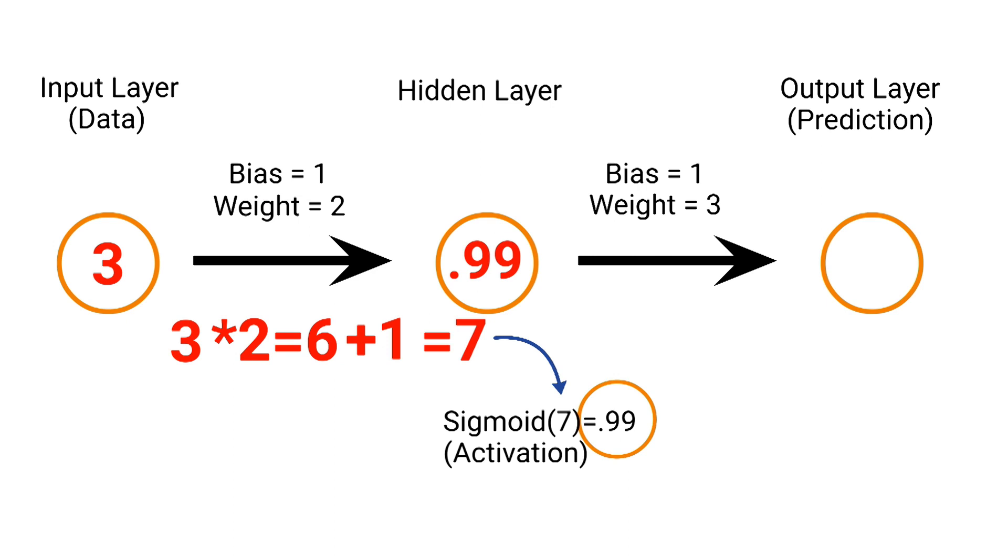Now, hopefully, you're starting to pick up on the pattern here, and that 0.99 would then get multiplied by the weight in the next tensor. Plus the bias would give us a final value of 3.97. We would again pass that 3.97 to our sigmoid activation function, and that would give us a final prediction of 0.98.